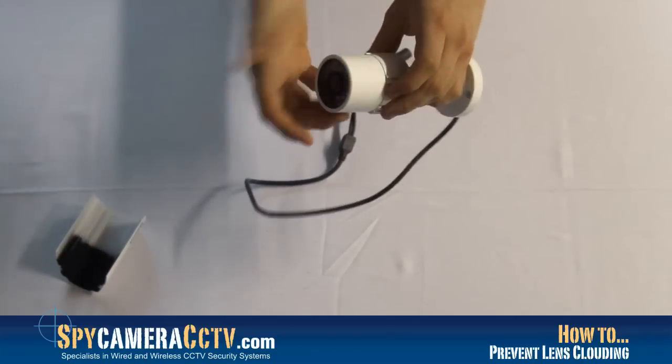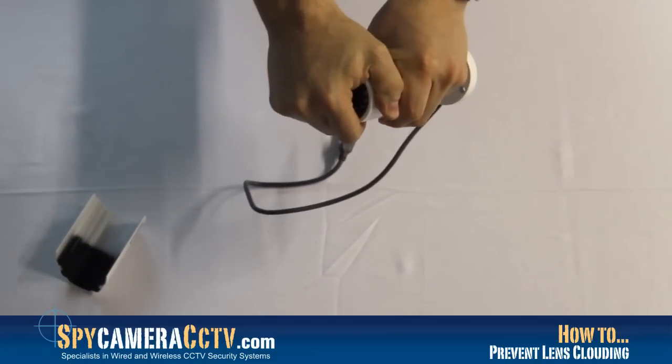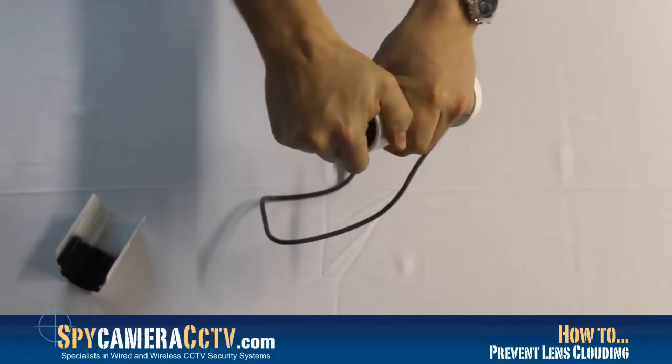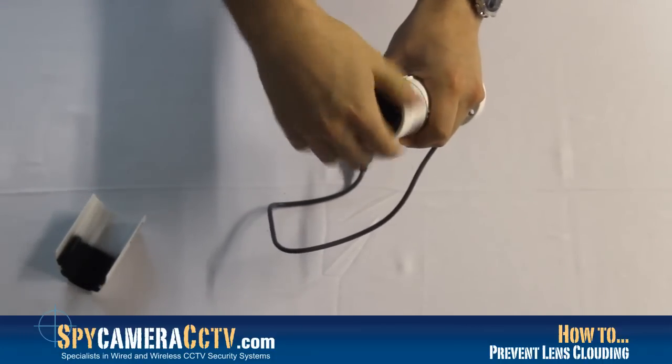Now a little bit of elbow grease will just help to remove the end of the lens on this one here. There it is. You shouldn't need to force your camera, it should come off but some are tighter than others.